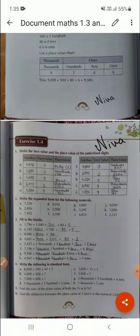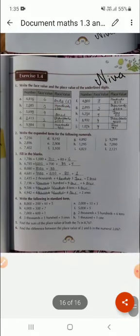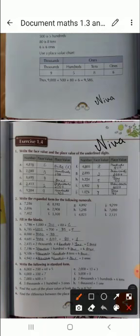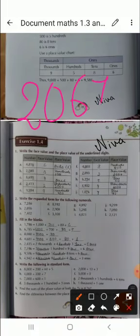Now the next question is find the difference between place value of two and six in numerals two zero six seven. So what will you do? First of all, two zero six seven. You have to find the difference. Difference means subtraction.